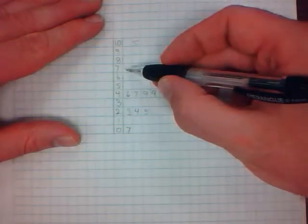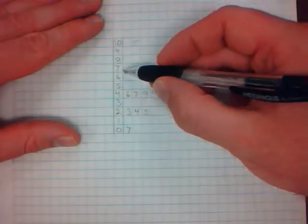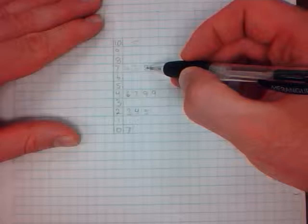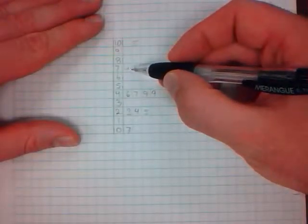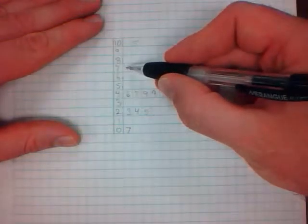Now notice here I have a forty, a seventy-four and a seventy-three. This is not in order. Ideally when we create the stem and leaf plot we would like them to be ordered with the lowest on the inside and the largest on the outside.